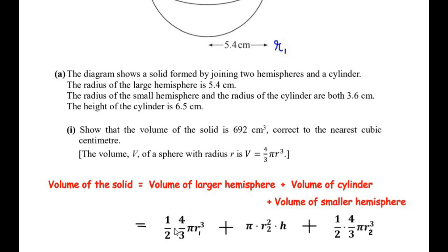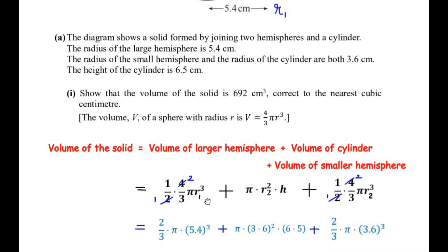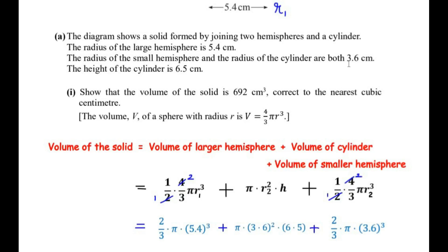We simplify: (1/2) × (4/3) becomes (2/3), so the formula becomes (2/3)πr1³ + πr2²h + (2/3)πr2³. Substituting values: r1 = 5.4, r2 = 3.6, h = 6.5. So we get (2/3) × π × 5.4³ + π × 3.6² × 6.5 + (2/3) × π × 3.6³.